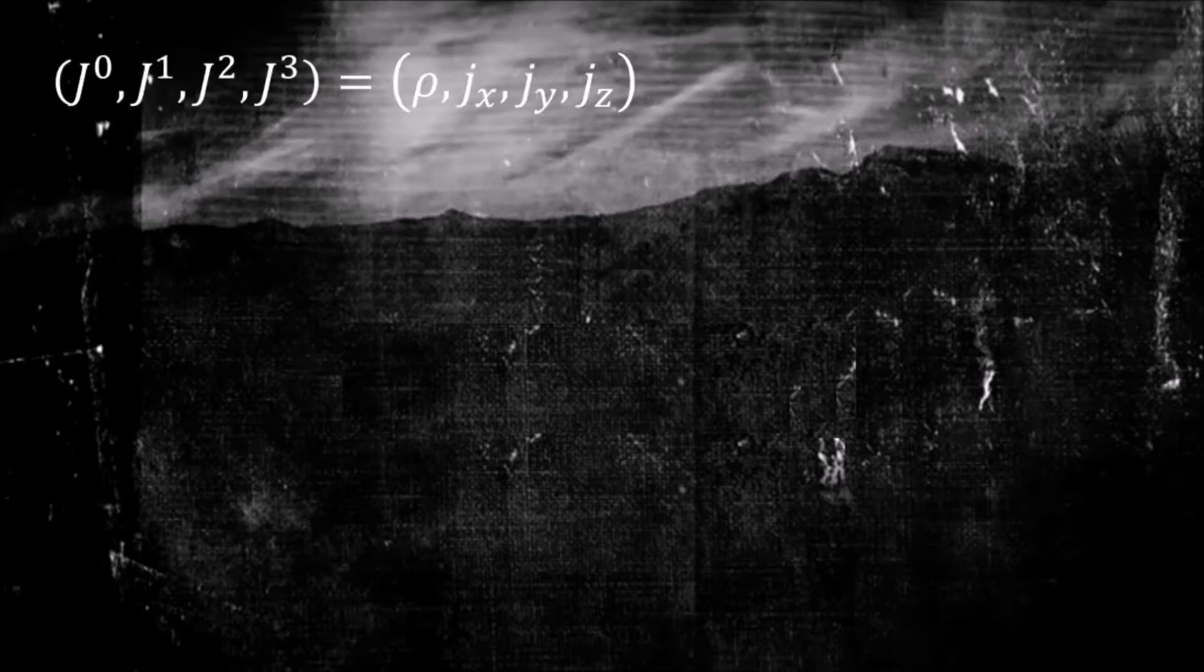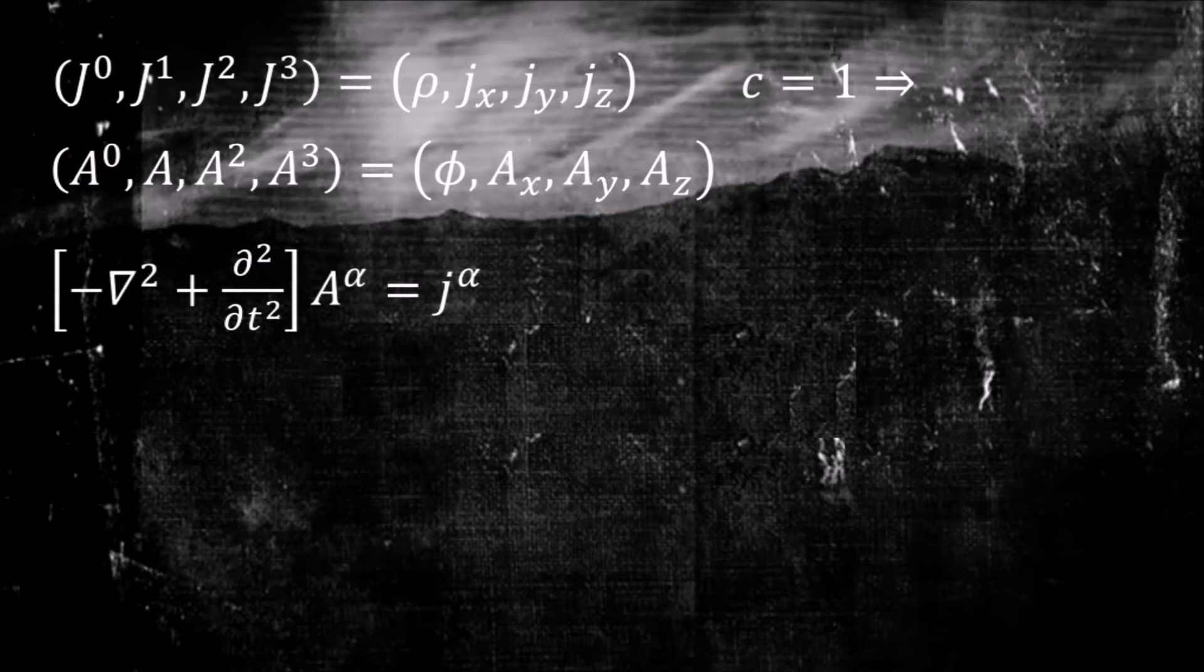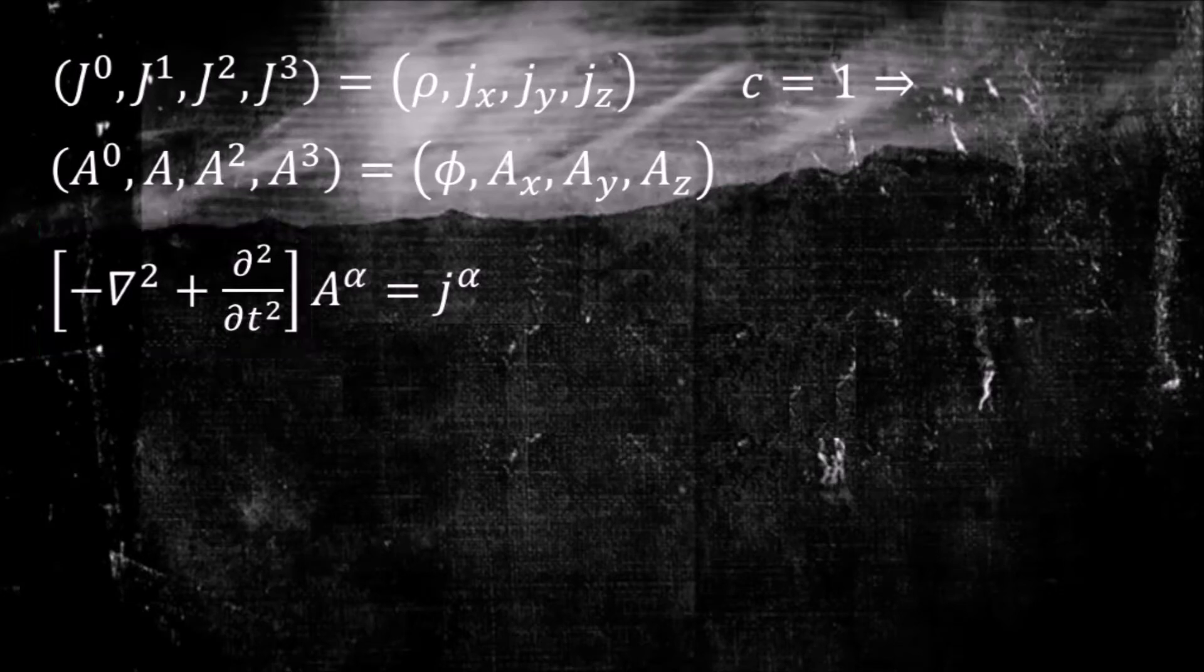Hello everyone, in the last video we looked at Lorentz transformations of two four vectors, the four current and the four vector potential. We showed that they are related through this equation. I promised that I would show you the proof that this operator is Lorentz invariant, so let's get that out of the way first.